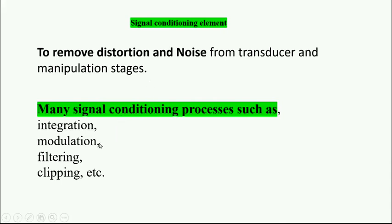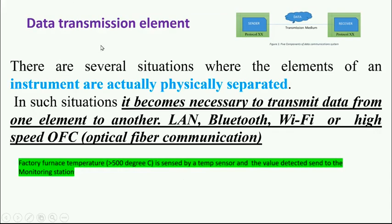Finally, data transmission element. In many situations, sometimes the sensing element and the receiver element is far distance from the sensing element. That time we have to transmit the data to achieve a remote place. So we can use local area network, Bluetooth, Wi-Fi, or high-speed USB cable, etc. So that is the data transmission for the receiver side, the monitoring.